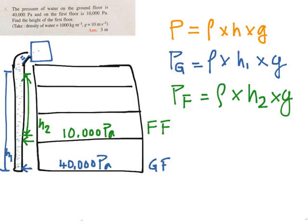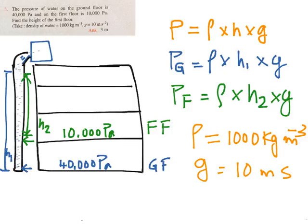So now you put the values in the equation. Rho is given as 1000 kg per meter cube and g is given as 10 meter per second squared.